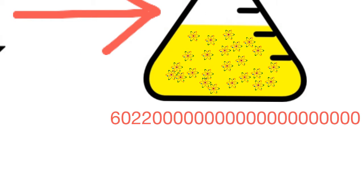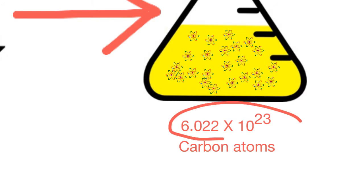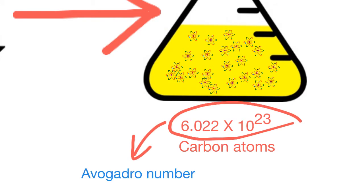This number — 6.022×10²³ — can be written in scientific notation. Chemists take this number as a reference and call it the Avogadro number, or Avogadro constant, in honor of Italian scientist Amedeo Avogadro.